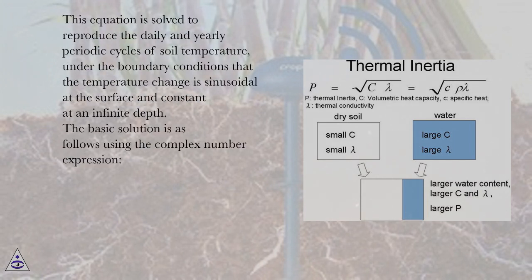This equation is solved to reproduce the daily and yearly periodic cycles of soil temperature, under the boundary conditions that the temperature change is sinusoidal at the surface and constant at an infinite depth. The basic solution is as follows using the complex number expression: